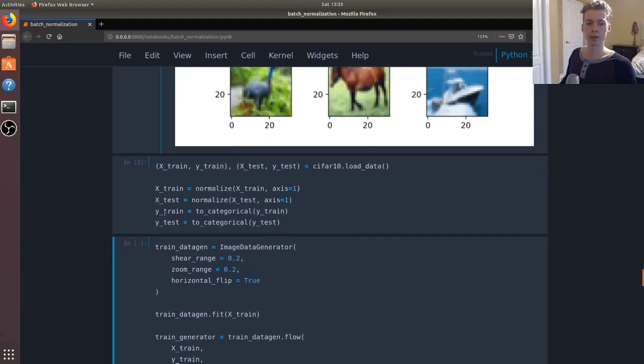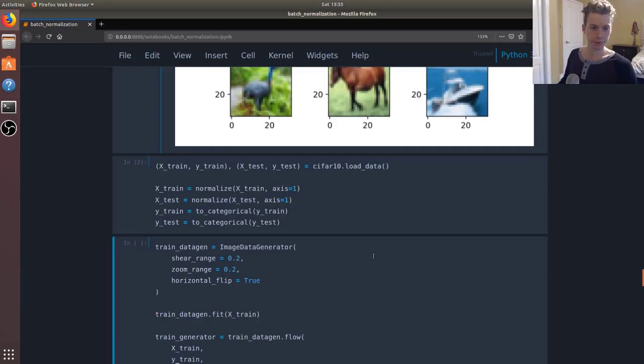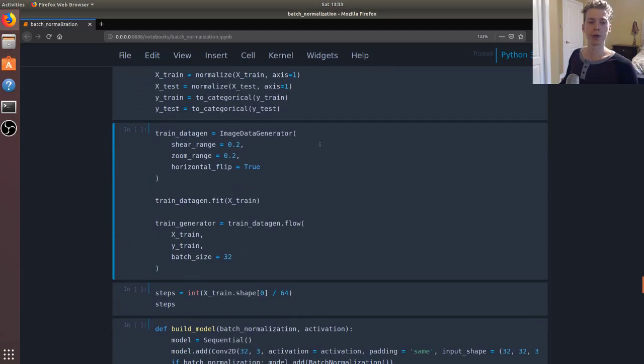We use the to_categorical because we want to encode our data such that our model doesn't think that one image has a higher priority than another just because its integer value is higher.